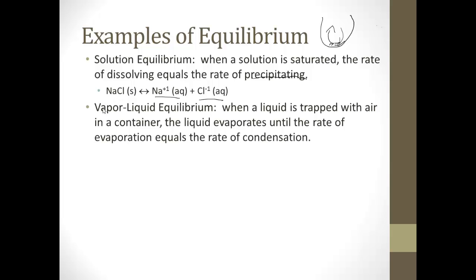When we talked about vapor pressure, you end up with a vapor-liquid equilibrium. Liquid is trapped with air in a container — some liquid is evaporating, others are condensing, and they're equal. That creates vapor pressure, with liquid water becoming gas and back and forth.